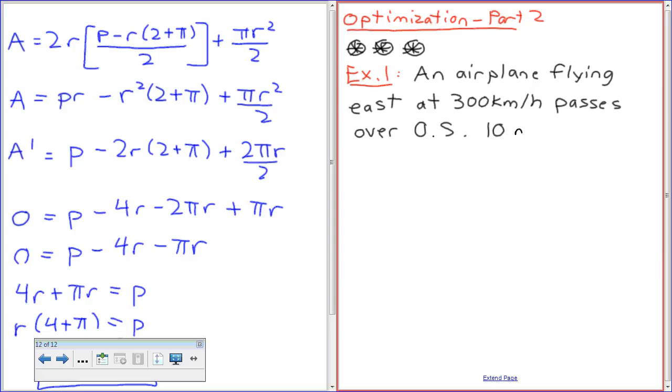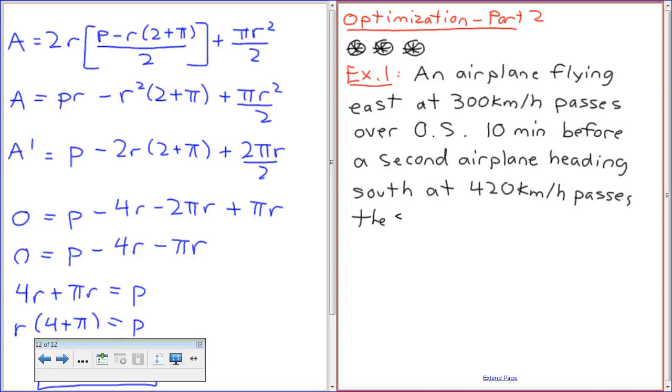Ten minutes before a second airplane heading south at 420 km/h passes the same point. A. What time is their distance at a minimum? B. What is the minimum distance?